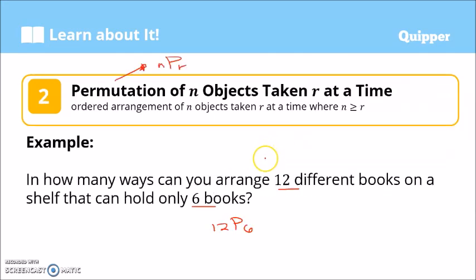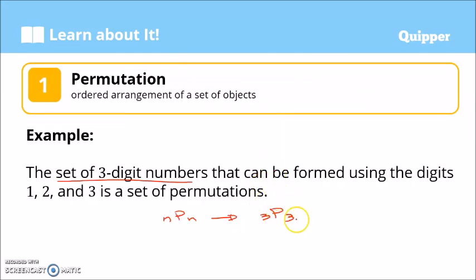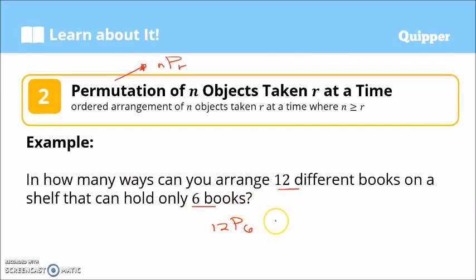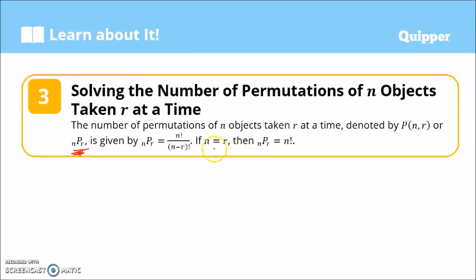Like 3P3—since n equals r, that is just 3 factorial. The answer would be 3 times 2 times 1, so there would be 6 permutations. Now for 12P6, we use nPr equals n factorial over n minus r factorial.